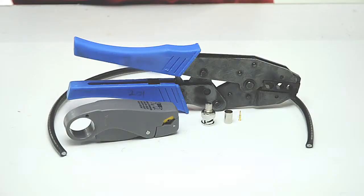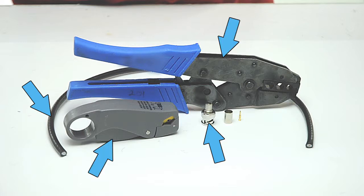For today's project we're going to need RG6 plenum cable, BNC male crimp connector, coax stripper, and crimp tool.